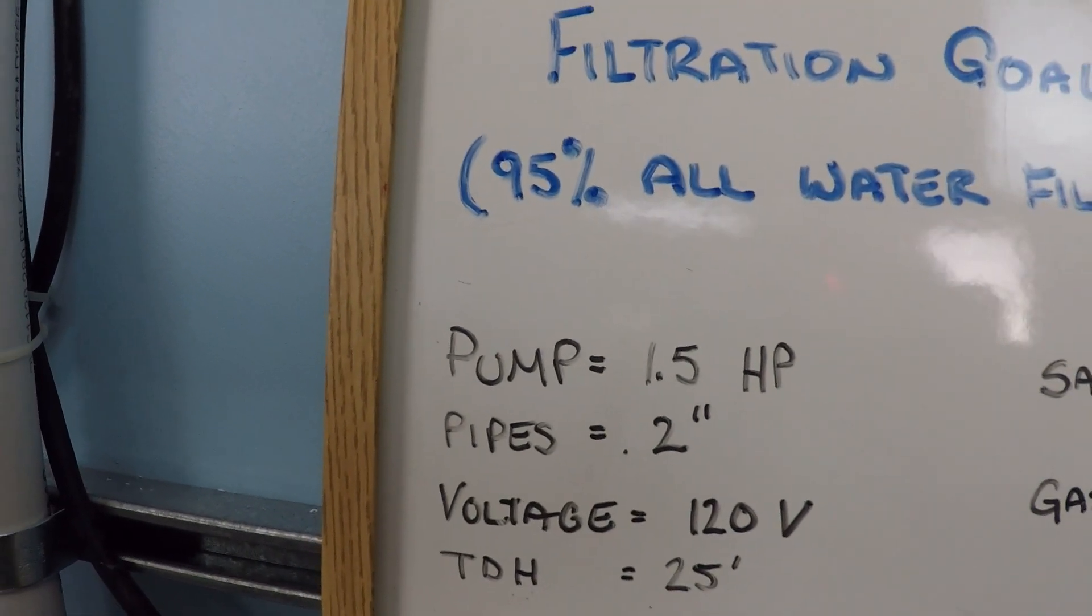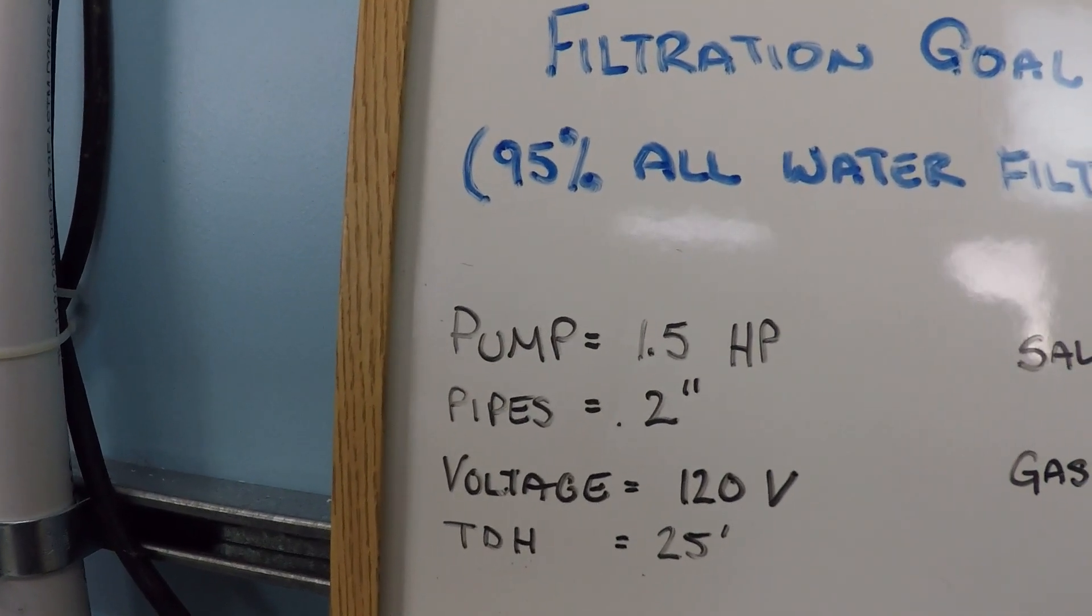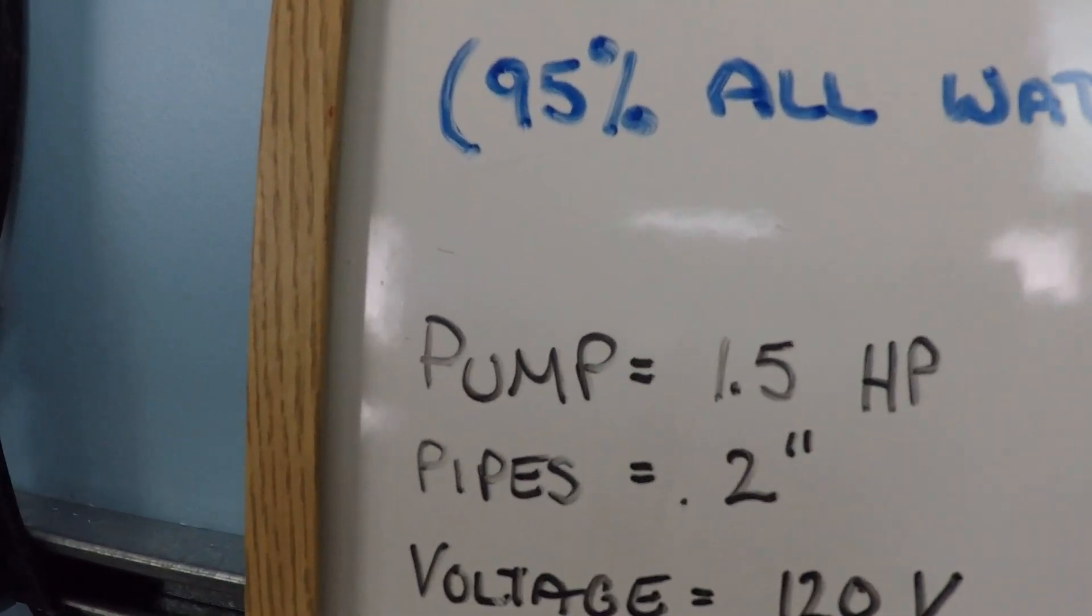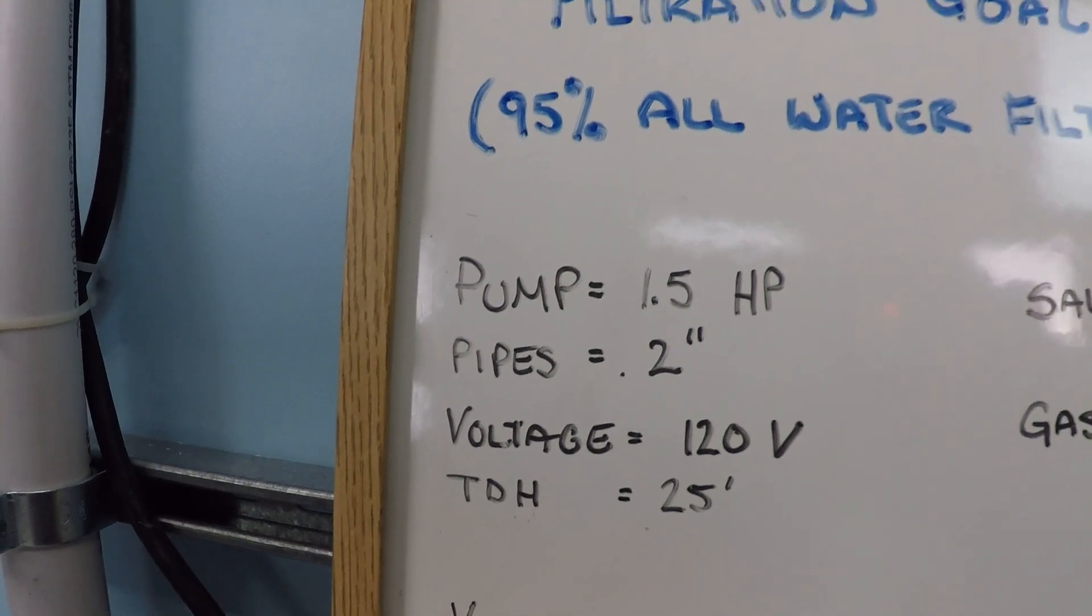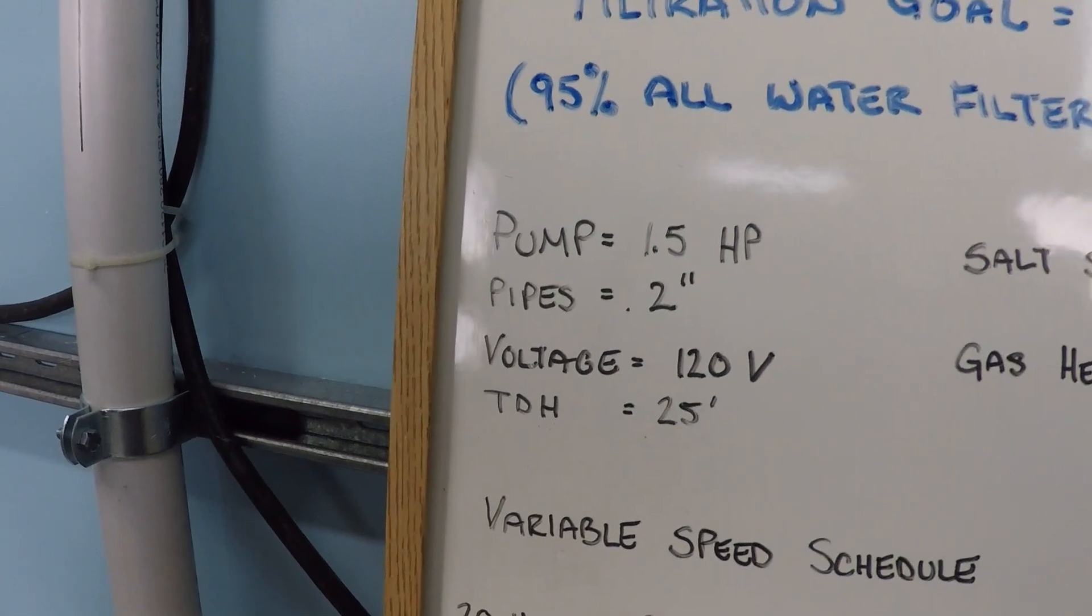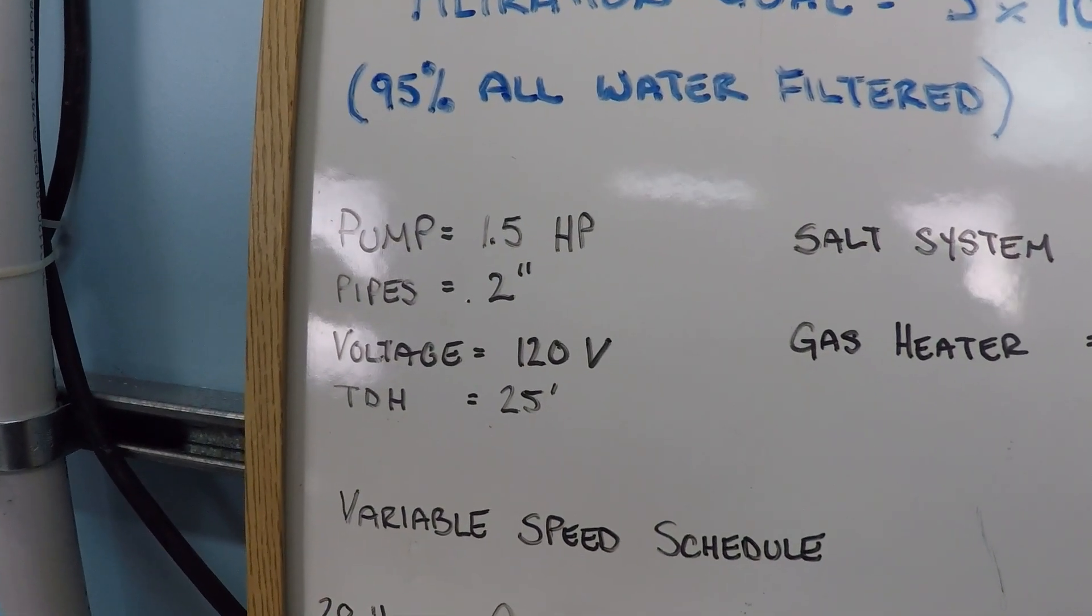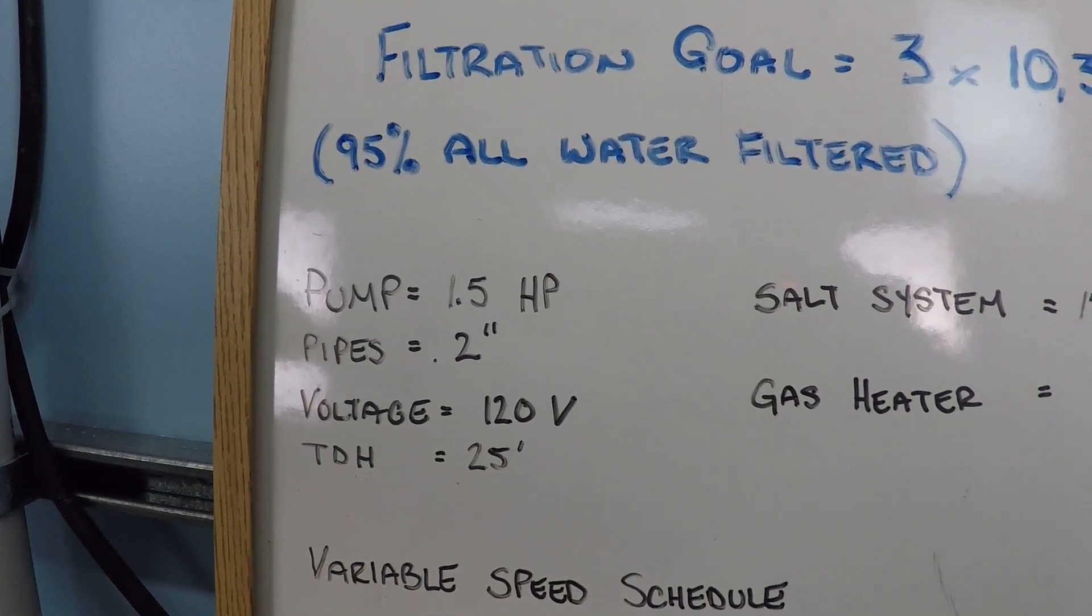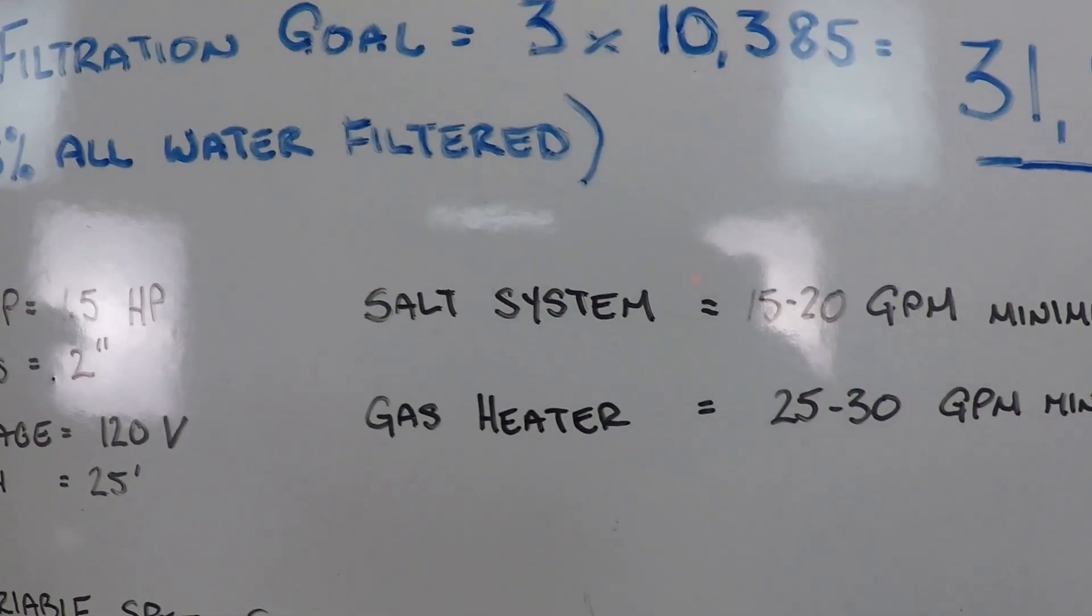This one in our example has a 1.5 horsepower pump, 2-inch plumbing lines, which might be a little bit uncommon for a smaller pool. That would represent a more efficient design for a smaller pool like this. The pump in our example is 120 volts. The total dynamic head, resistance to flow at 25 foot, represents a pretty low resistance to flow, meaning the pump and filter are pretty much located adjacent to the pool. They're not remotely located.